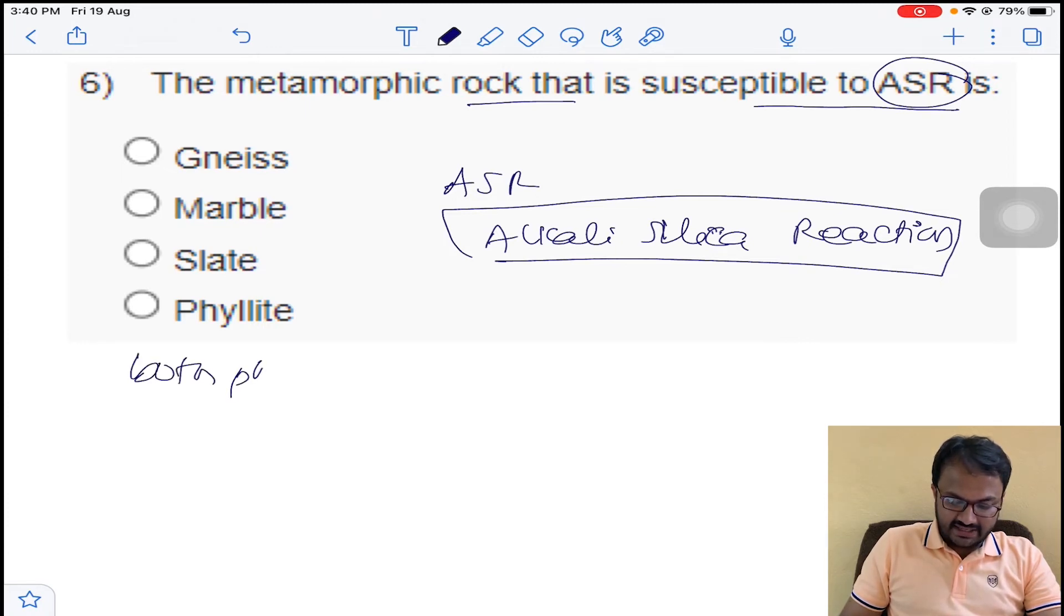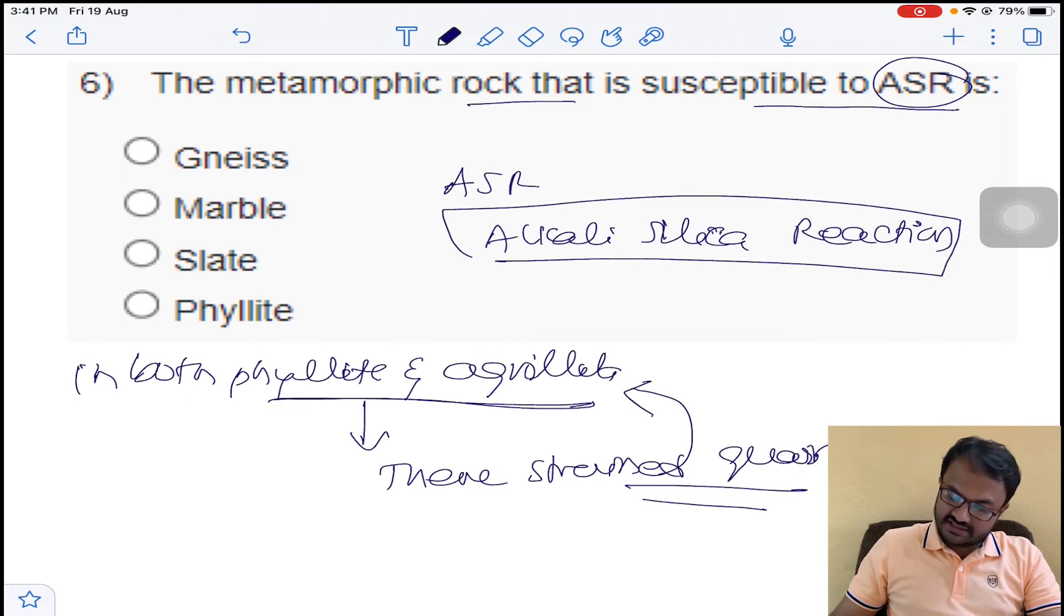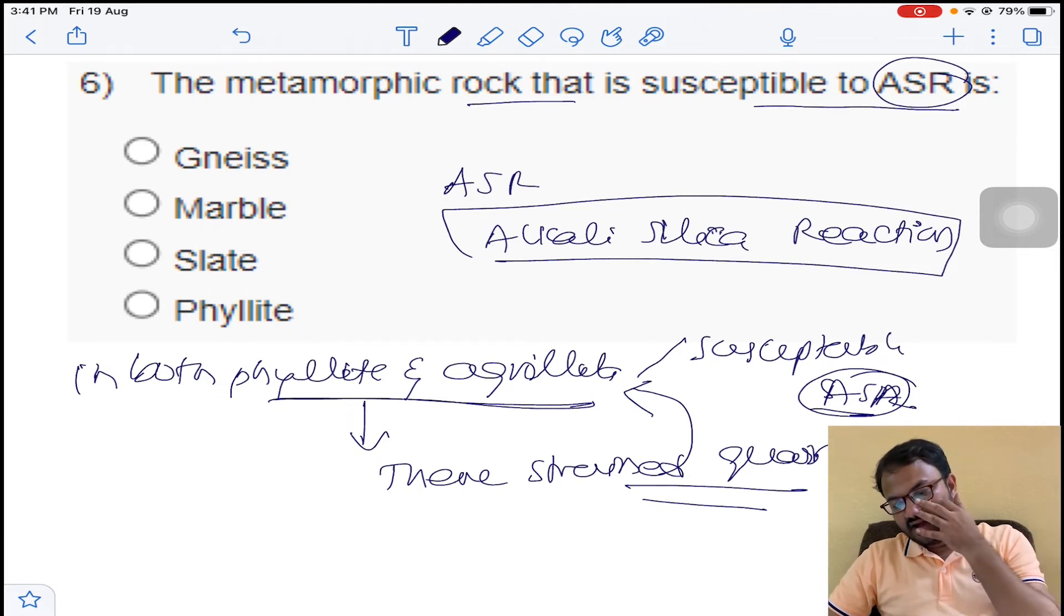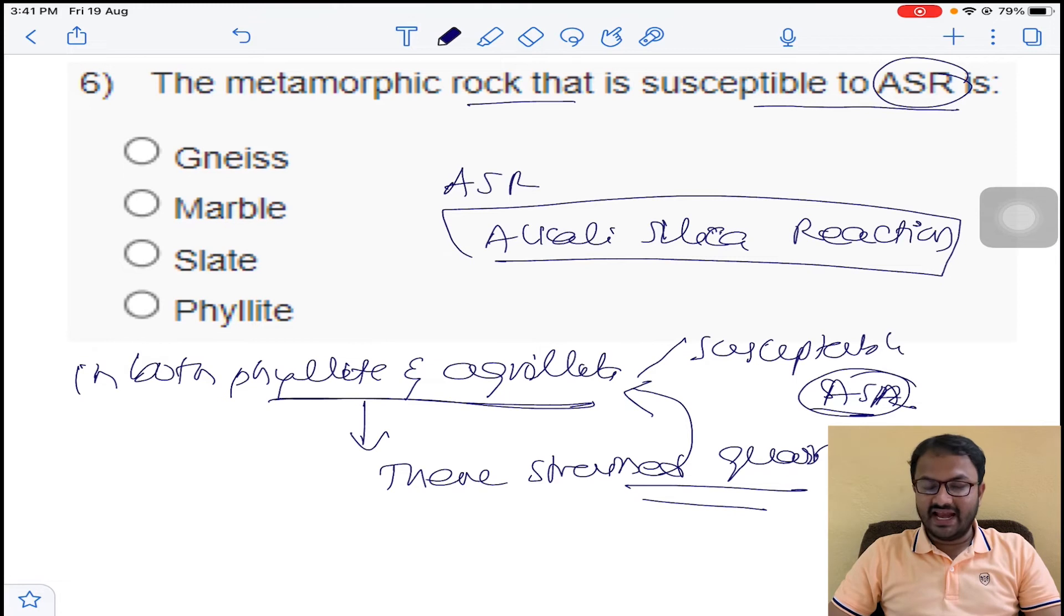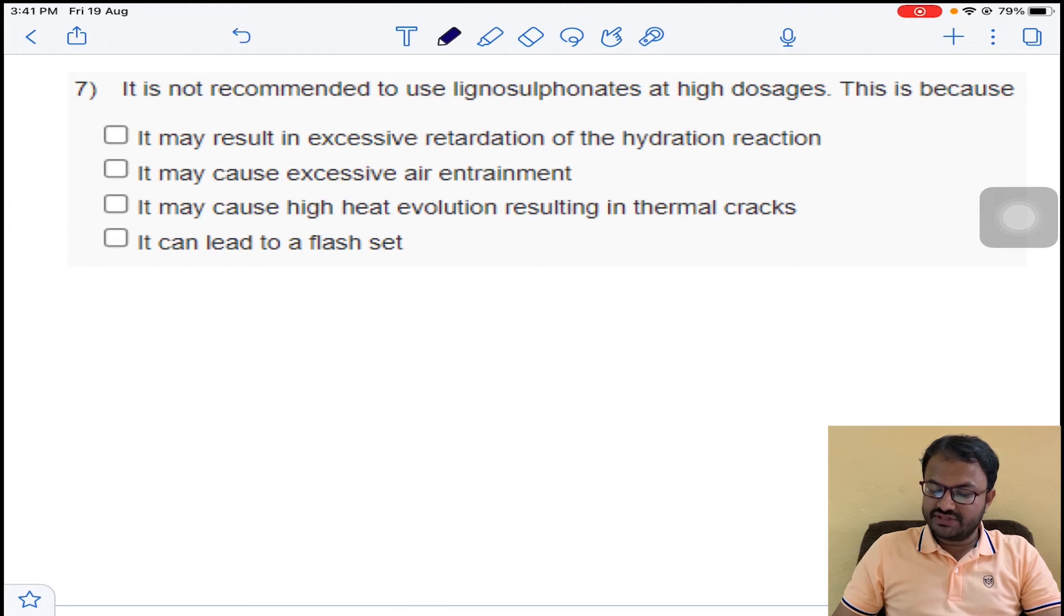In both phyllite and argillite there is strained quartz. Because of the presence of strained quartz, these are susceptible to ASR. By what reason are these argillite and phyllite susceptible to ASR? By presence of strained quartz. Option D for question number 6.